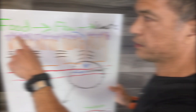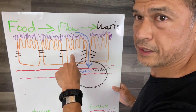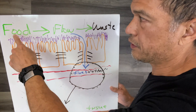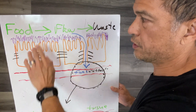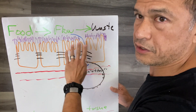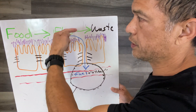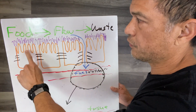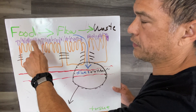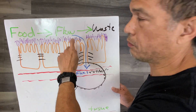Let me show you what this looks like. This is your gut — I've done the illustrations before. This is the food, this is the blood vessel, and these are the finger-like projections of microvilli in the small intestine. Food goes this way through those finger-like projections. Here's the viscous layer with bacteria, probiotics.